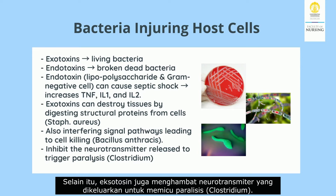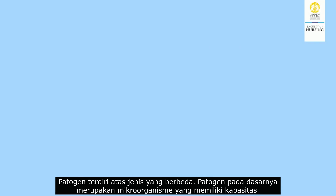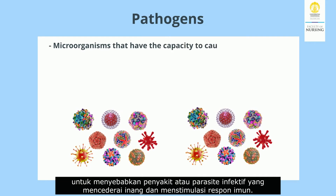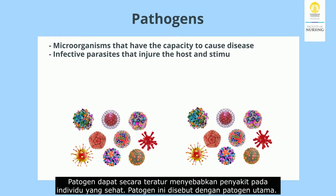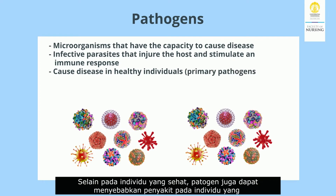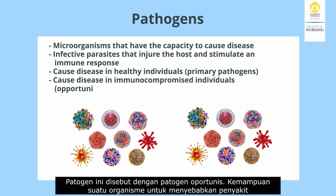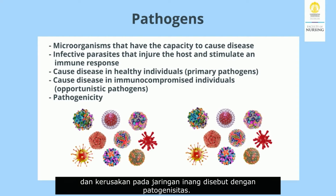Exotoxins also interfere with signaling pathways leading to cell killing, and can inhibit neurotransmitter release to trigger paralysis. Pathogens are microorganisms that have the capacity to cause disease or act as infective parasites that injure the host and stimulate an immune response. Pathogens that regularly cause disease in otherwise healthy individuals are called primary pathogens, while those that cause disease in immunocompromised individuals are called opportunistic pathogens. The ability of an organism to cause disease is called pathogenicity.